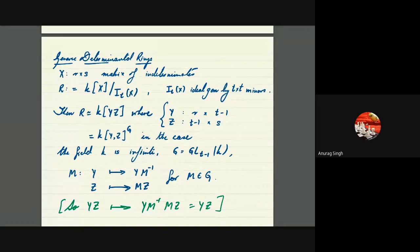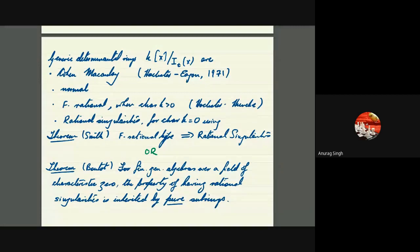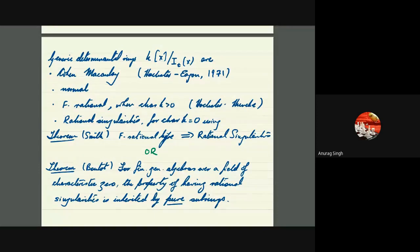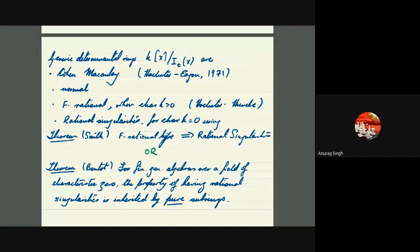Some properties of these generic determinantal rings: they are known to be Cohen-Macaulay in full generality, a result due to Hochster and Eagon from 1971, with various special cases handled prior to that. They are always normal. And coming closer to the topic for today, they are F-rational when K has positive characteristic. If K is a field of characteristic p > 0, with no other restrictions on p, then these generic determinantal rings are F-rational.